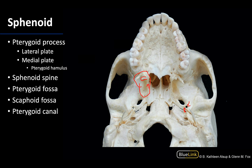Returning to the pterygoid process region, there are two fossae located in between the two plates. The pterygoid fossa is going to be the more inferior of the two, closer to the teeth. The part closer to the base is more superiorly placed, and that portion of the fossa is going to be the scaphoid fossa, which is the origin site for the tensor veli palatine.